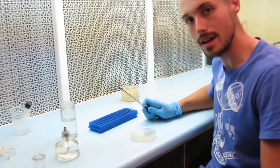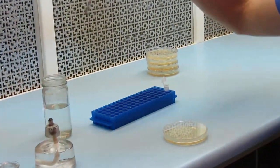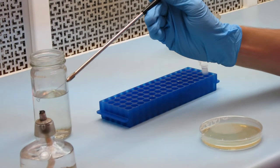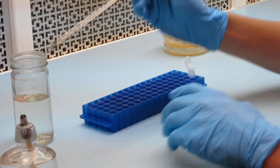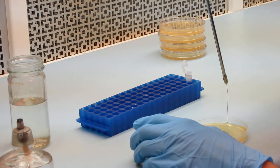The first step is to take your inoculating loop right here, and you're going to sterilize that in a flame. You'll dip that in alcohol and then flame sterilize it until it's red hot. And then you'll dip it in your media around the edge until you hear a sizzle to know that it's cool.